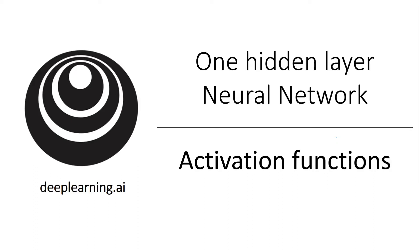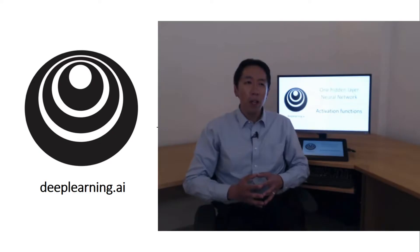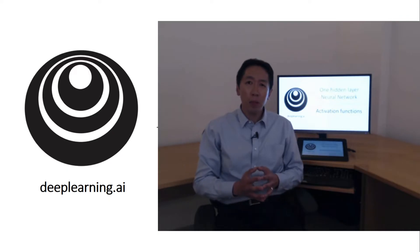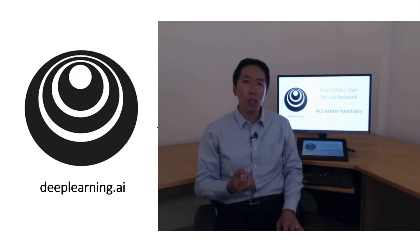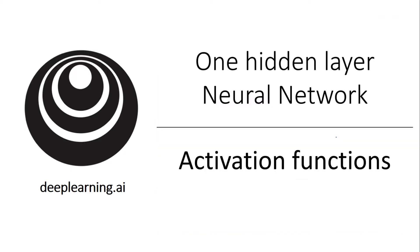When you build your neural network, one of the choices you get to make is what activation function to use in the hidden layers as well as at the output units of your neural network. So far, we've just been using the sigmoid activation function, but sometimes other choices can work much better. Let's take a look at some of the options.